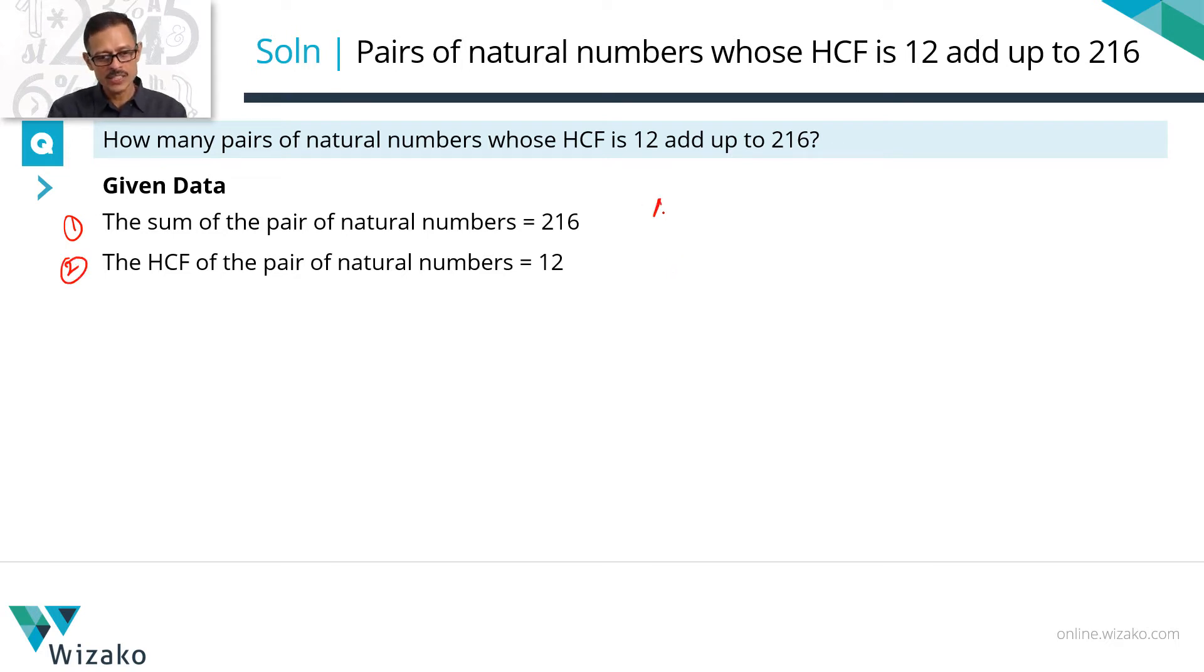Let's start with the first condition. Let's say those two numbers are A and B. A and B are both positive integers. The sum of these two numbers is equal to 216. This is the first condition.